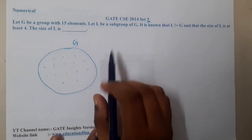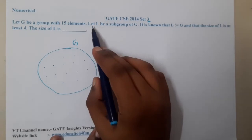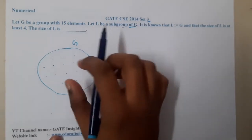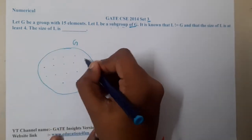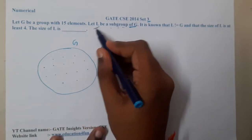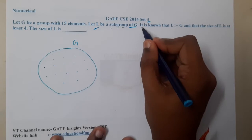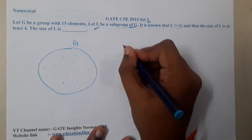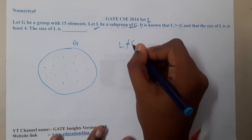15. So this is G. And they are saying let L be the subgroup of G. So basically, in this whole group there is a small group L. And they are clearly saying it is known that L is not equal to G.